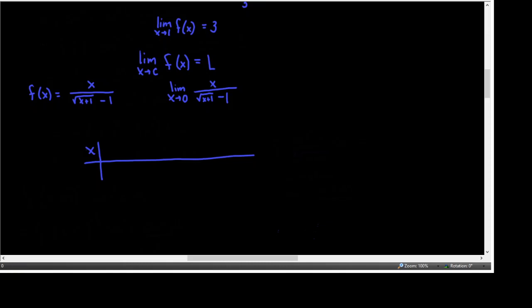I'm going to start on the left side of 0 at something fairly close, and I get an answer of 1.99499 when x is −0.01. Even closer: x = −0.001. Notice how close we sometimes have to get to our target value to see what's going on. You might already have a guess and you may be right, but sometimes you have to get extremely close. I'm showing you possible x values close to 0 that you might use to make sure you're doing this correctly.